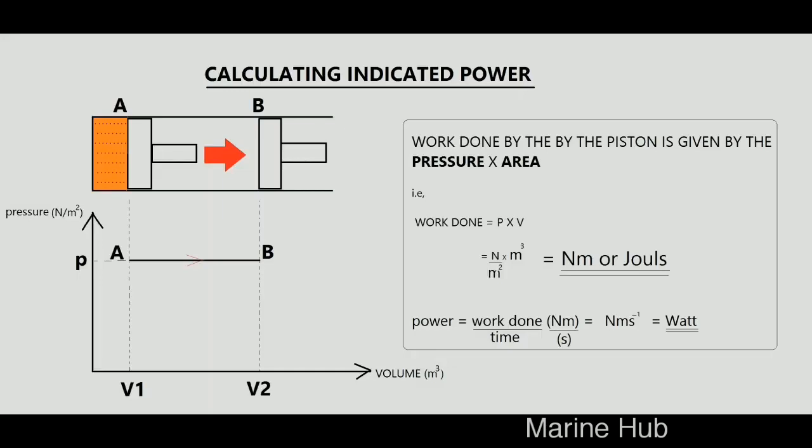Now we will see how to calculate indicated power. Suppose the gas in the cylinder expands at a constant pressure P, we can see it on the graph also. Just remember that the units for work done is Joule and the units for power is Watt.